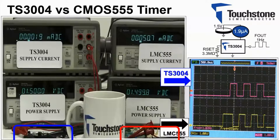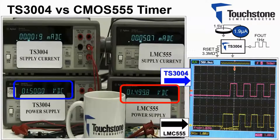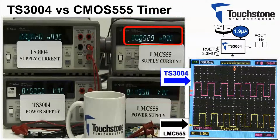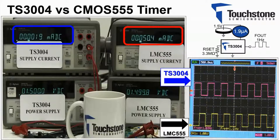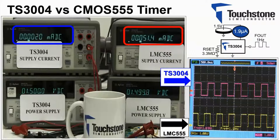Now applying a 1.5 volt supply, as displayed here. The CMOS 555 is consuming about 50 microamps of current, while the TS3004 is only demanding about 1.9 microamps of supply current.